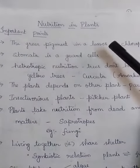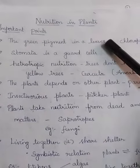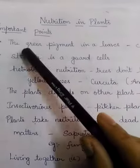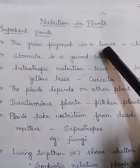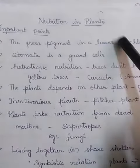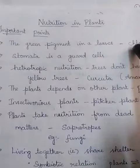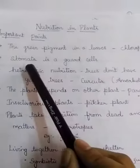Hello friends, today we are going to discuss the important points in nutrition in plants. The leaves are green in color because they contain chlorophyll, which is the green pigment in leaves.